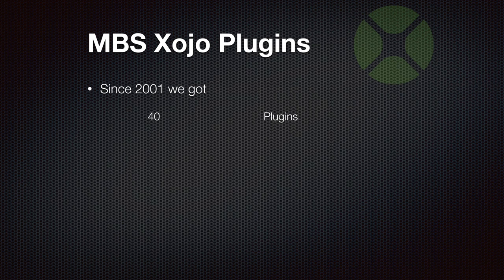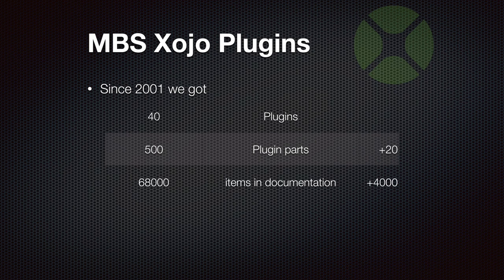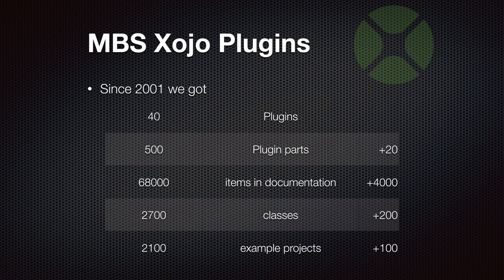Over 20 years we now have about 40 plugins, composed of 500 plugin parts. We just added 20 parts. We have 68,000 items in our documentation, 2,700 classes, and over 2,000 example projects. We made sure that all those example projects still compile on the latest Xojo version.